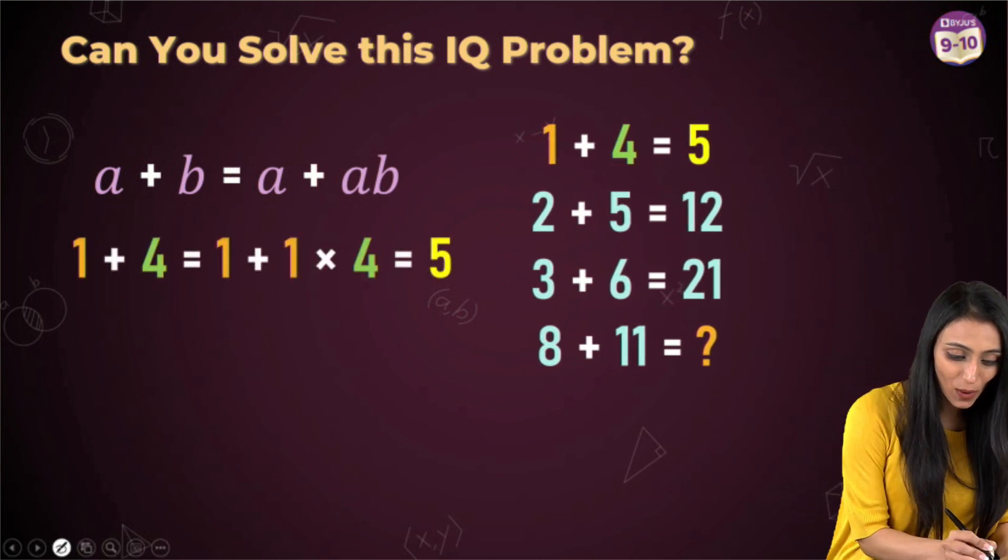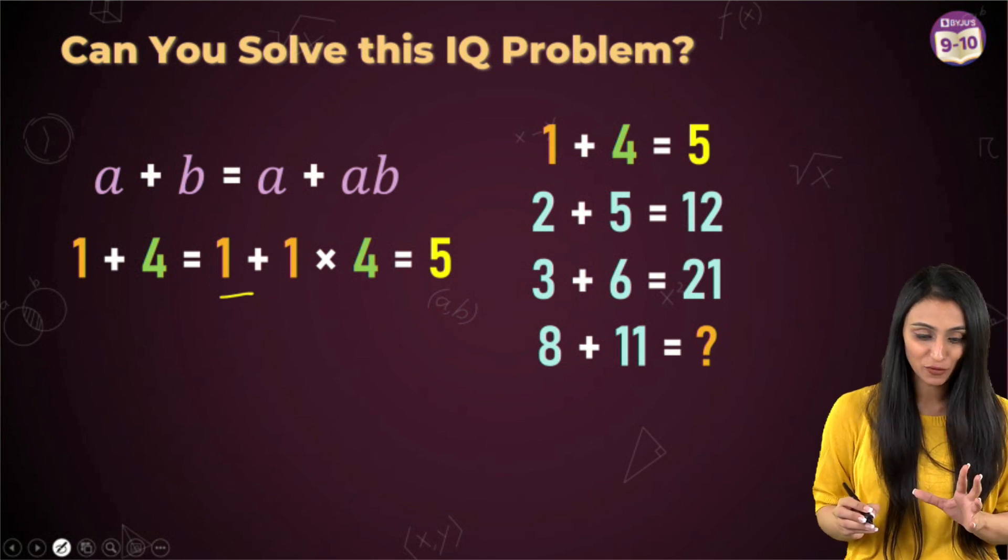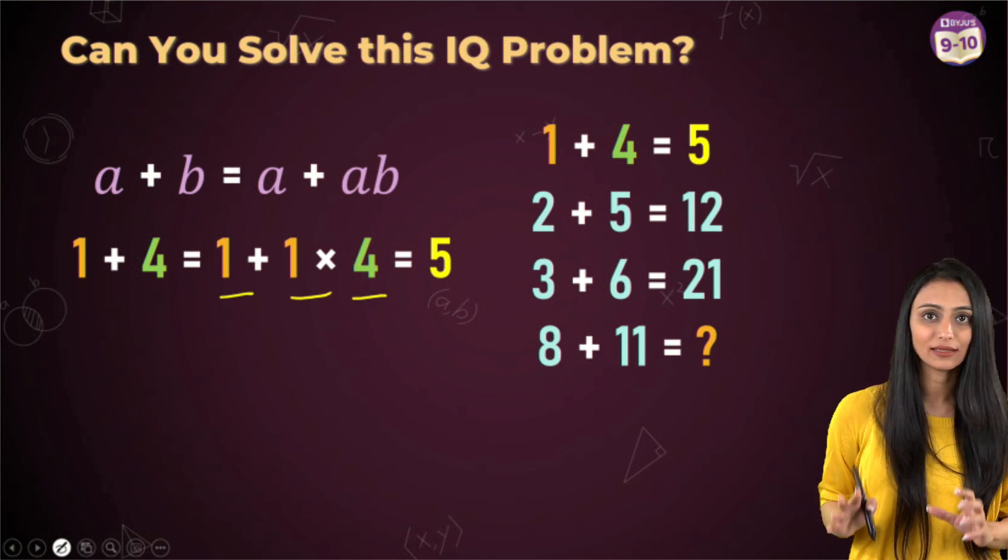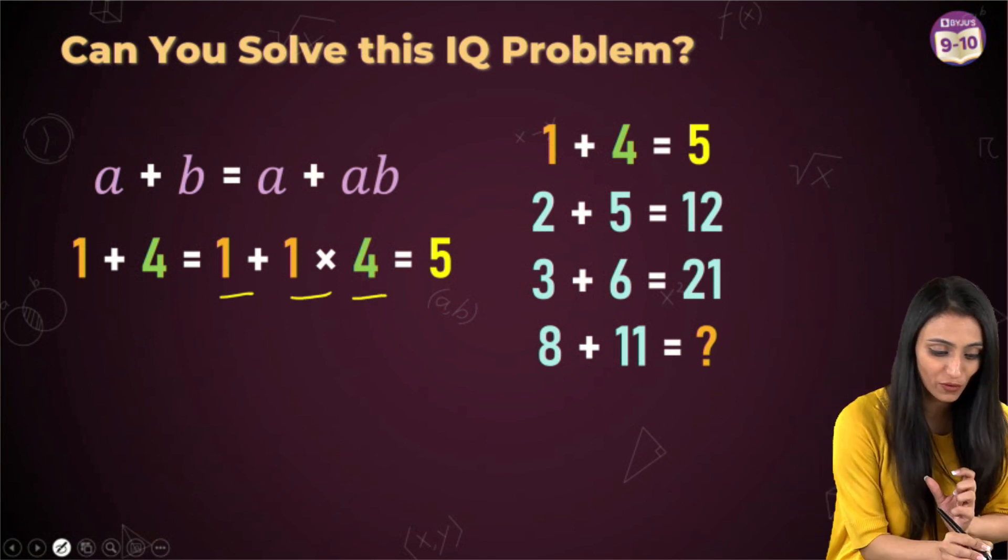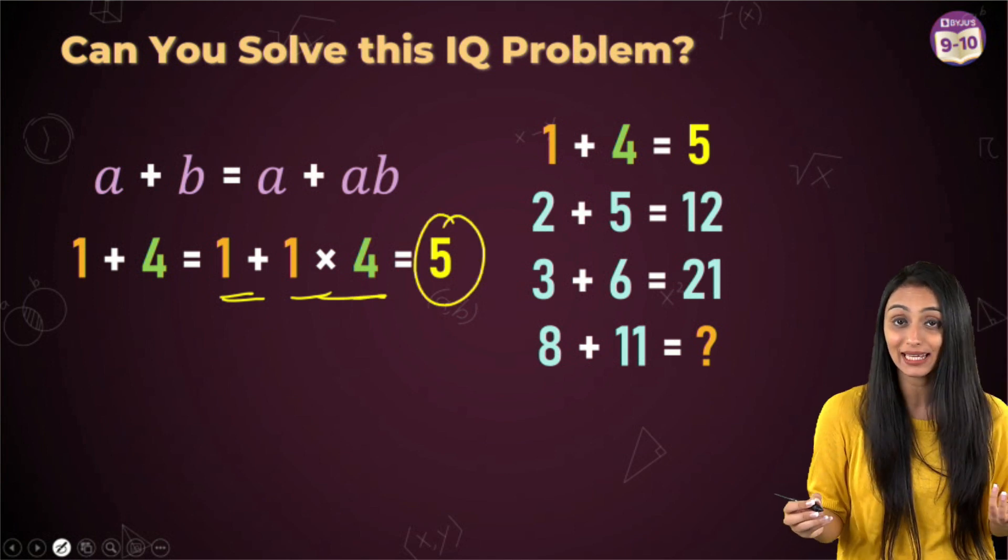Like for the first one, so 1 plus 4, 1 is representing A over here and if I do 1 times 4, that's 4. So 1 plus 4 over here, this gives me 5. That's how we are getting it.